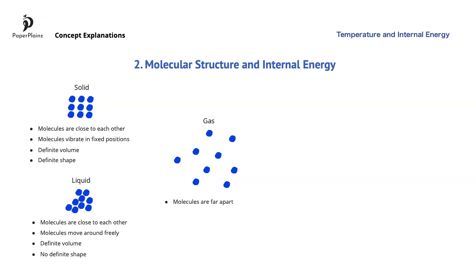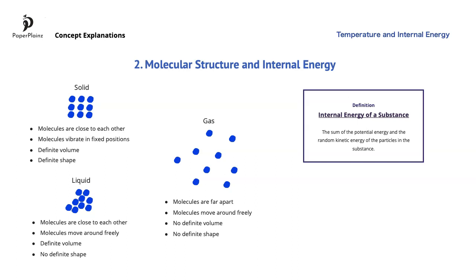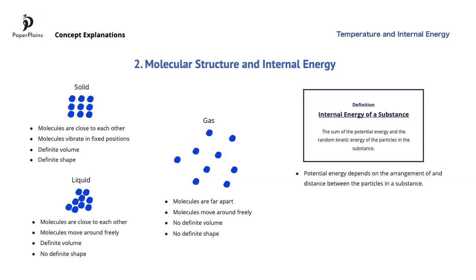In a gas, molecules are far apart and they move around freely. Because of this, a gas has no definite volume and no definite shape. It is easy to compress gases and they can be stored in containers of different shapes. The internal energy of a substance is closely related to its molecular structure. Internal energy is defined as the sum of the potential energy and the random kinetic energy of the particles in the substance. Potential energy depends on the arrangement of and distance between the particles in a substance.